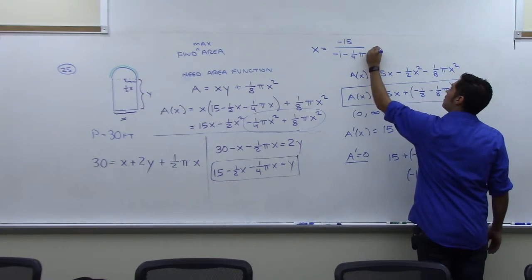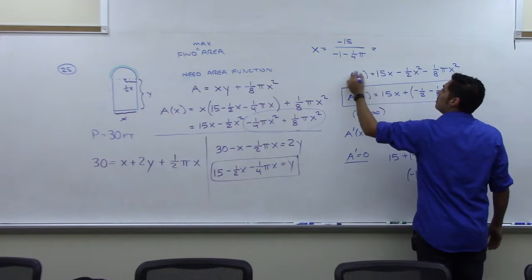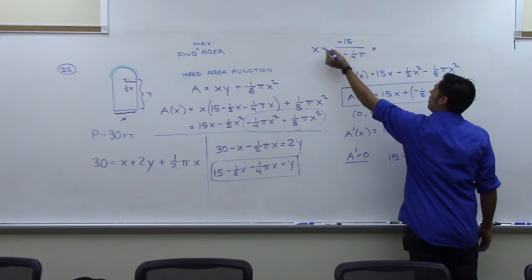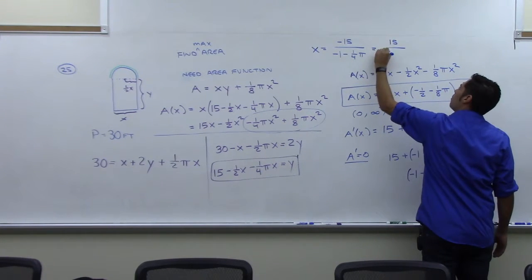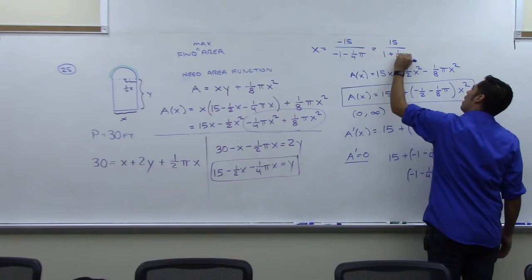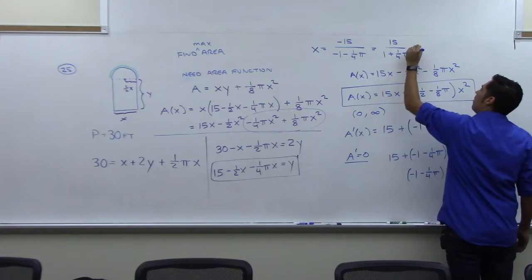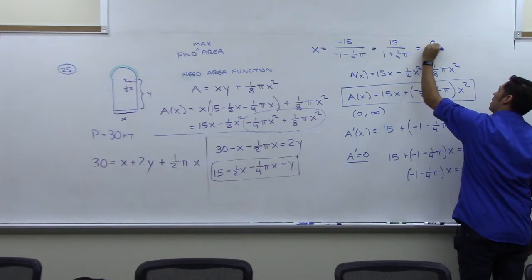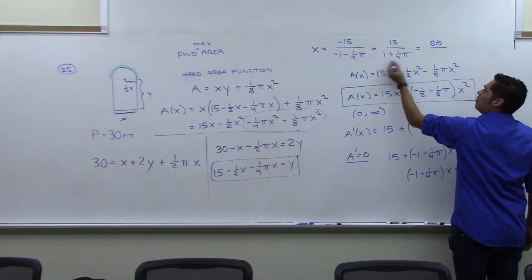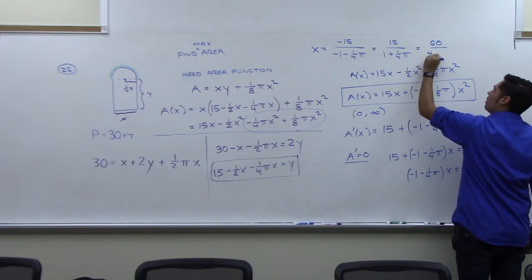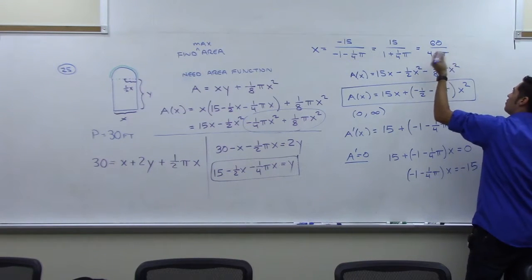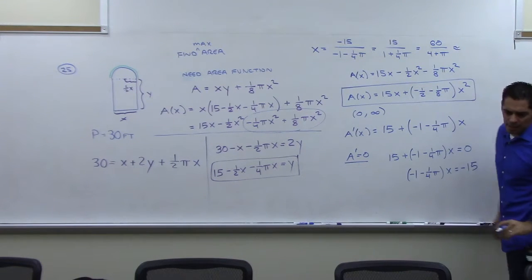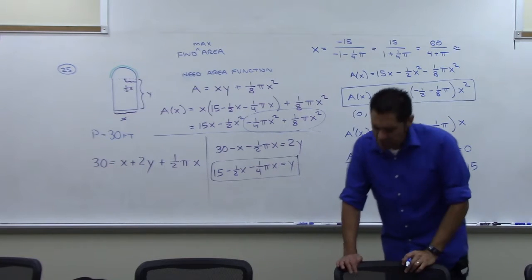The book does this. They factor out a negative here and a negative here, and they make that 15 over 1 plus 1 fourth pi. Then they multiply top and bottom by 4 to get 60 over, when you multiply here by 4, you get 4 here. And then the 4 and the 1 fourth cancel, you get pi. That's what the book does. But that's approximately 8.4.